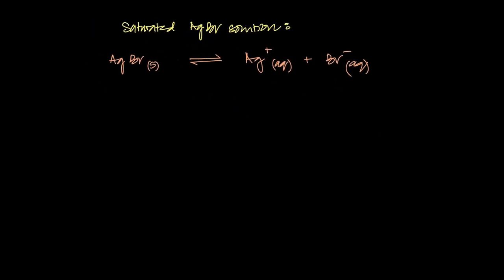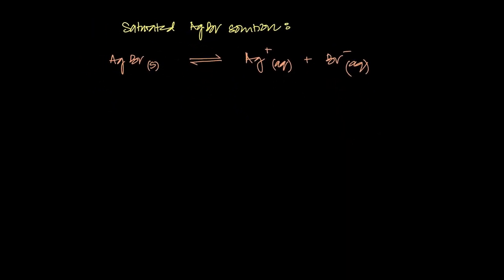So let's go back to one of the four earlier examples we saw of silver bromide. If I have a saturated solution of silver bromide, this is the equilibrium that exists: silver bromide becoming aqueous silver ions and bromide ions.